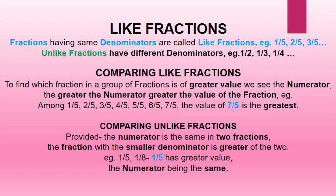Like fractions and unlike fractions. Fractions having the same denominators are called like fractions. For example, 1 upon 5, 2 upon 5, 3 upon 5, and so on. Unlike fractions have different denominators. For example, 1 upon 2, 1 upon 3, 1 upon 4, and so on, where 2, 3, 4 are different denominators.